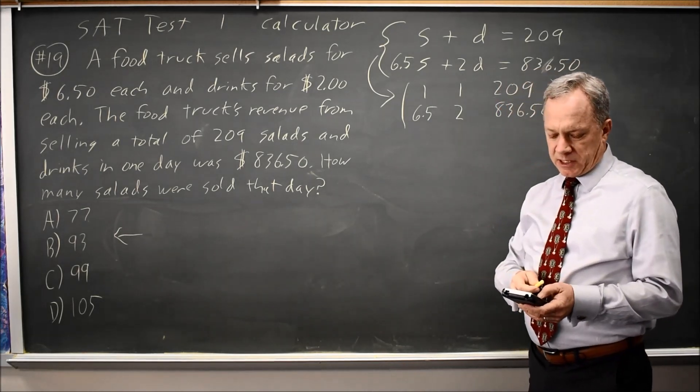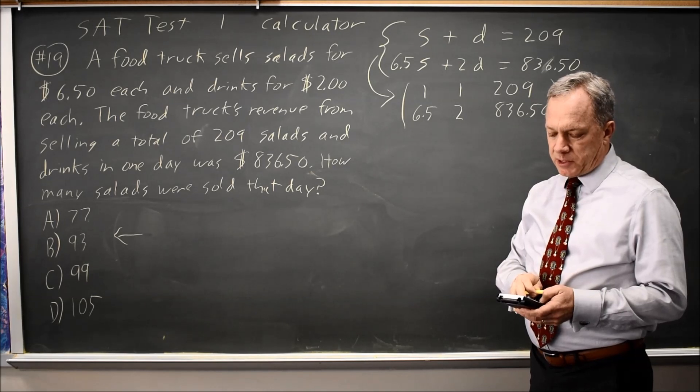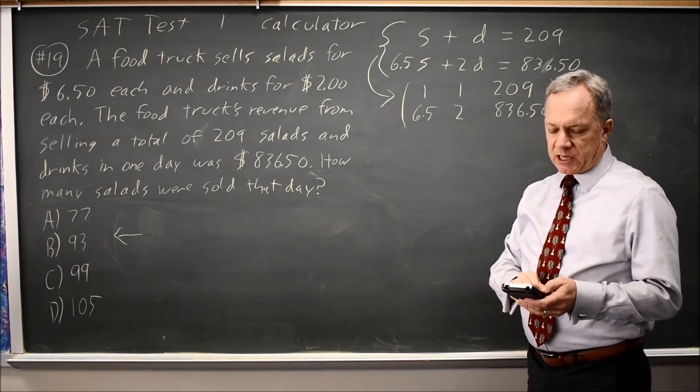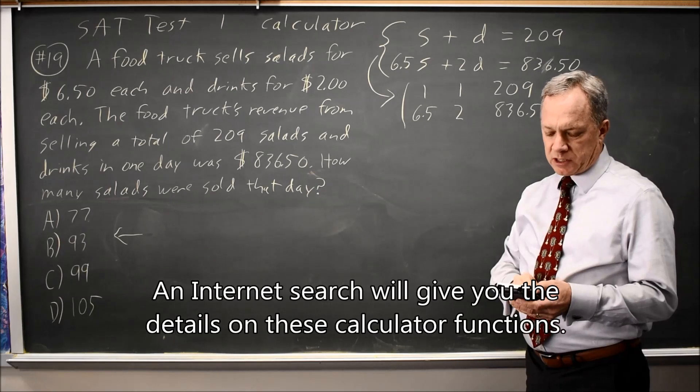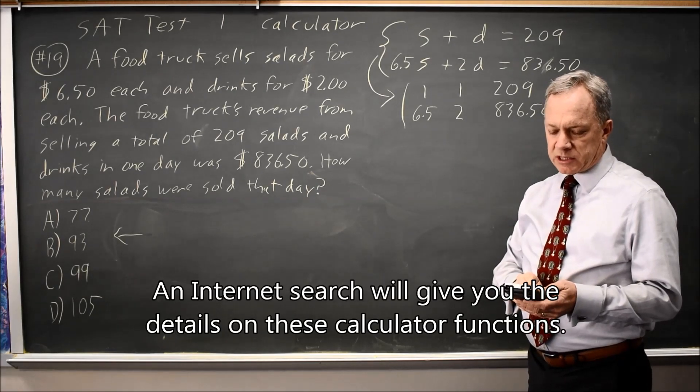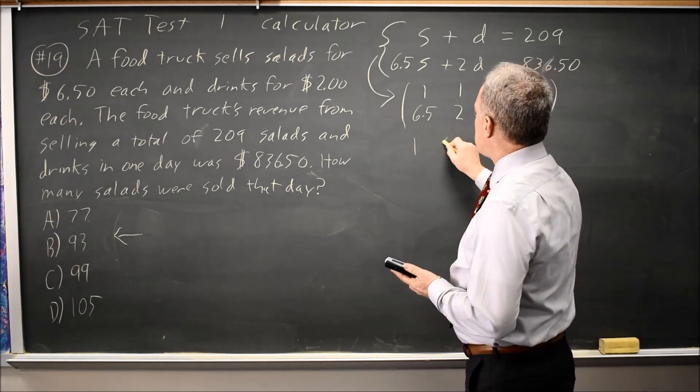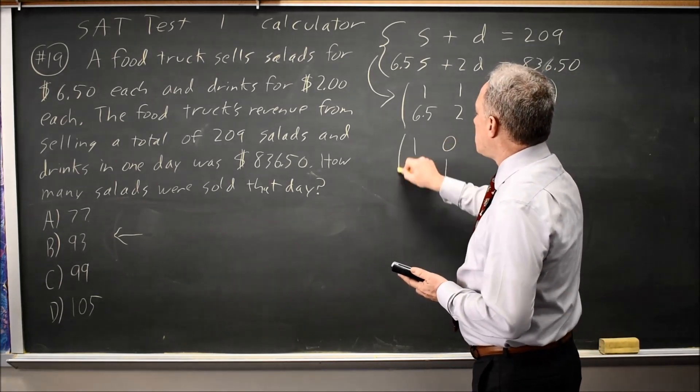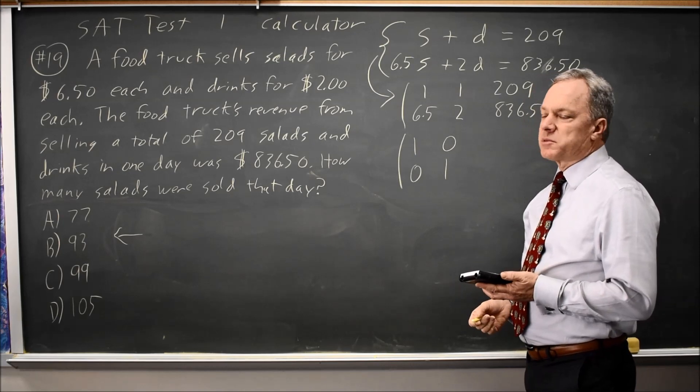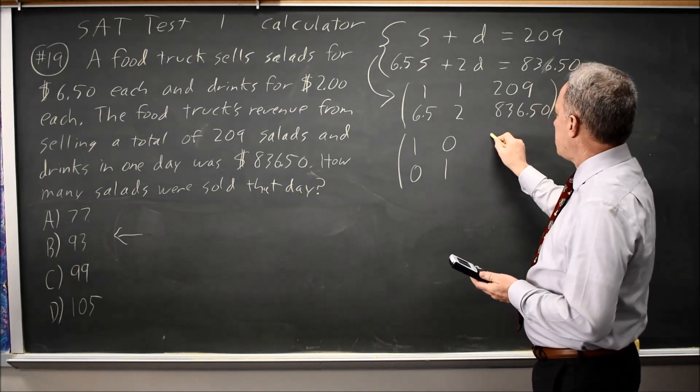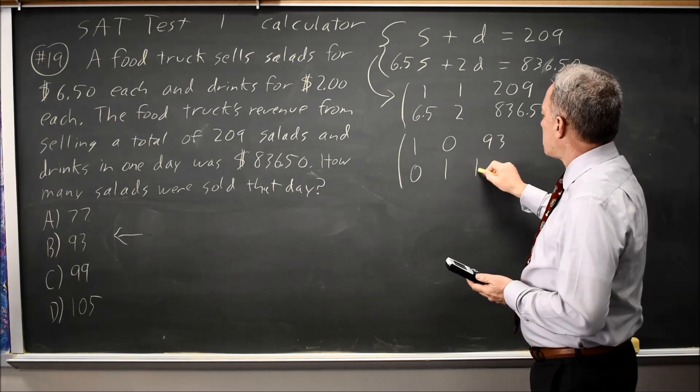If I enter that into my calculator and then go to matrix math on the TI-83 or 84, reduce row echelon form of matrix, I entered it as A, gives me 1, 0, 0, 1. You will always get those first two columns if there is a unique solution. And then 93, 116.